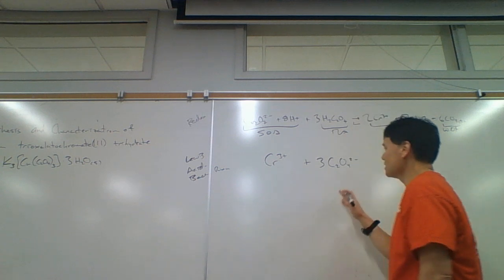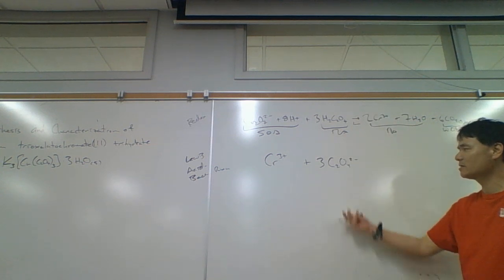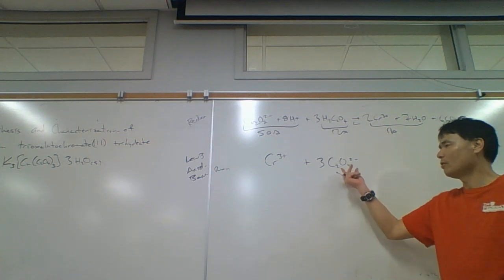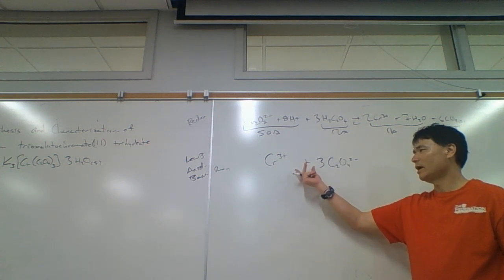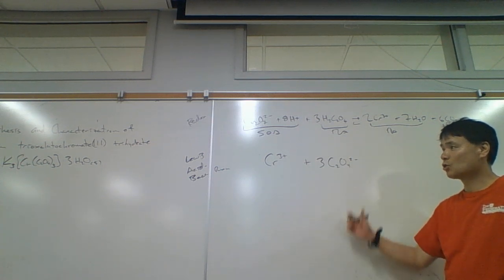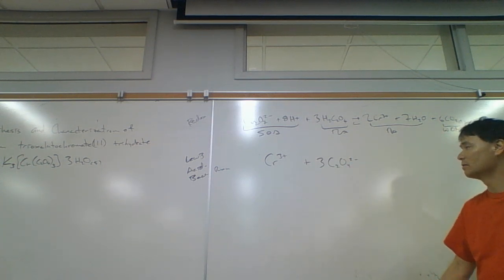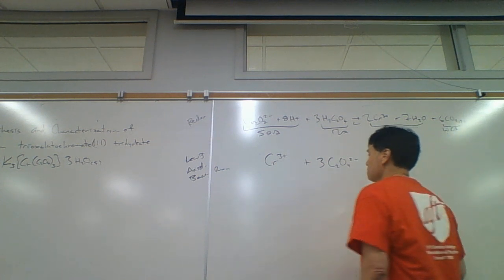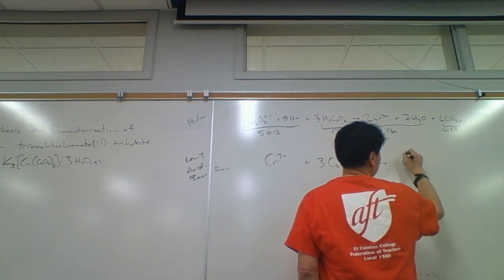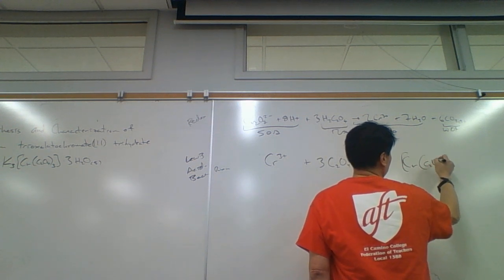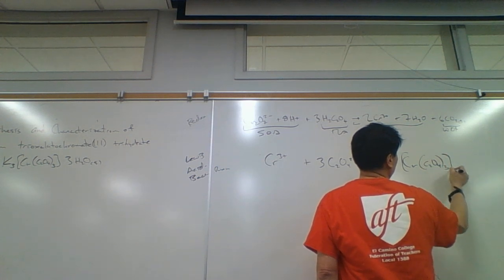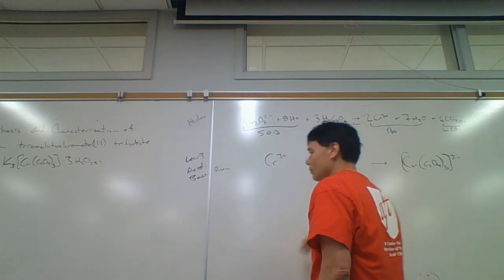And how many oxalates do we want? Three. So we need excess potassium oxalate. The excess potassium oxalate is going to supply plenty of oxalate. We don't want to form mono-oxalato or di-oxalato — we want to form tri-oxalato, that is completely reacted with oxalate. This is just going to go to tri-oxalato chromate-3 ion.